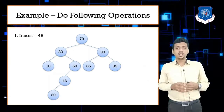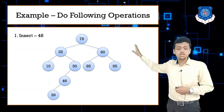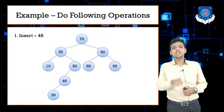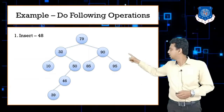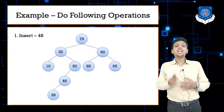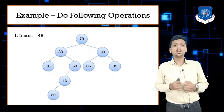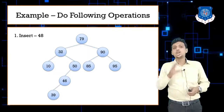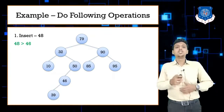To insert 48, first compare 48 with 79. 48 is less than 79, so it goes to the left side where we find 32. 48 is greater than 32, so move right. Then compare with 50 — 48 is less than 50, so go left where we have 46. 48 is greater than 46, so 48 is inserted on the right side of 46. Inserted successfully.